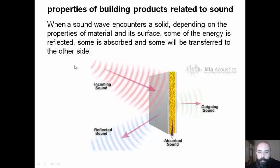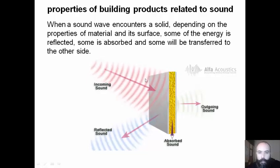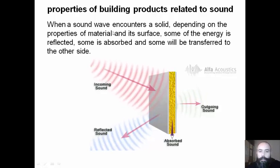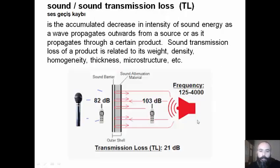When a sound wave encounters a solid building product, depending on the properties of the product and its surface, some of the energy is reflected, some is absorbed, and some will be transferred to the other side. Sound transmission loss is the accumulated decrease in intensity of sound energy as a wave propagates outwards from a source or through a certain building product.